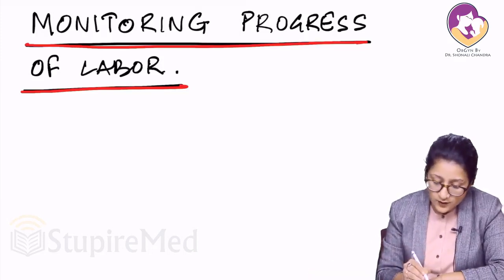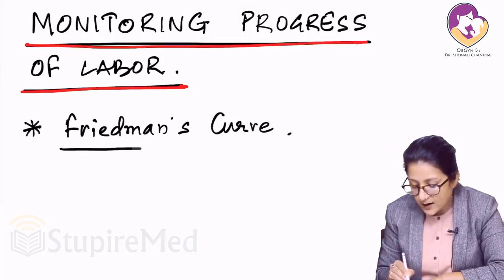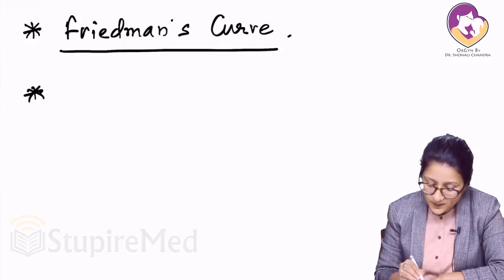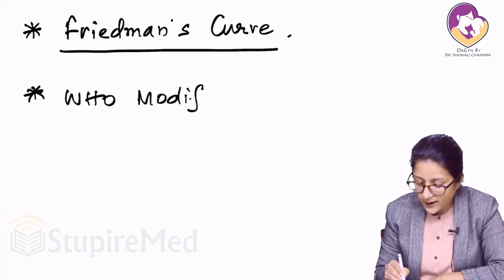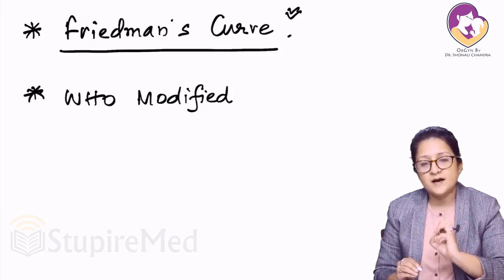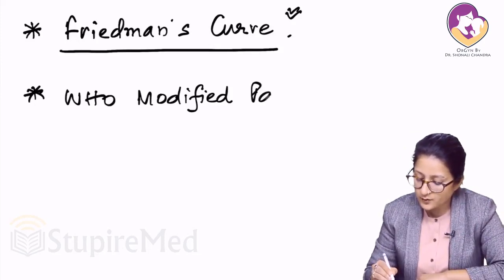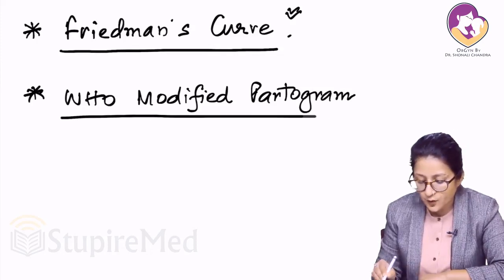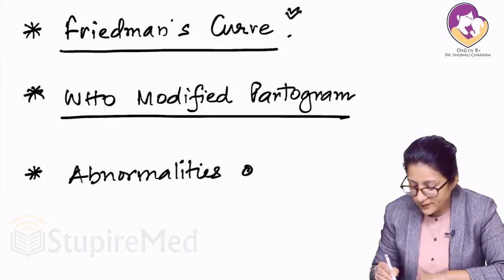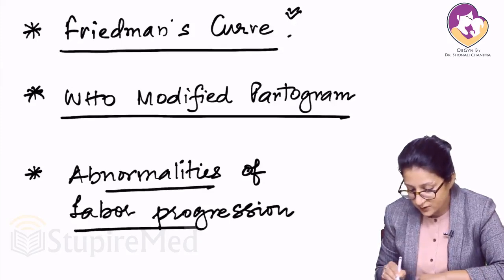First, we will talk about the Friedman's curve, because it was Friedman who gave us the idea of how labor progresses normally in the majority of women. After that, we talk about the WHO modified partogram — Friedman gave us the curve, and the WHO developed a modified partogram based on those principles to help us monitor labor. Lastly, we will talk about the abnormalities of labor progression.